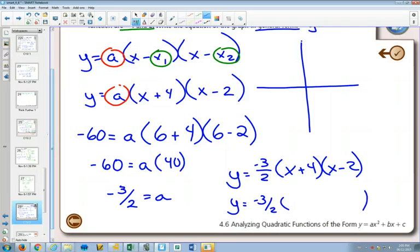I'll multiply those two together first. (x + 4) times (x - 2) will be x squared plus 2x minus 8.